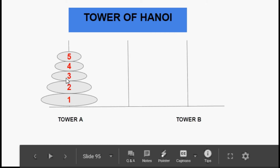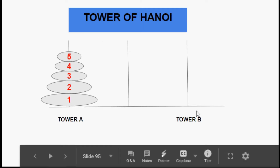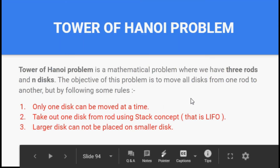Now, what is our target? Our target is to move all the discs from one tower to another tower. That means we are supposed to move all five discs from tower A to tower B, but before doing that transferring process we need to follow some rules.